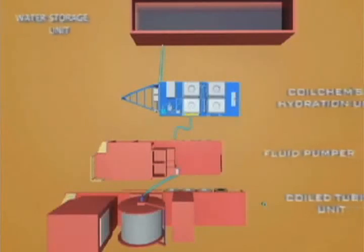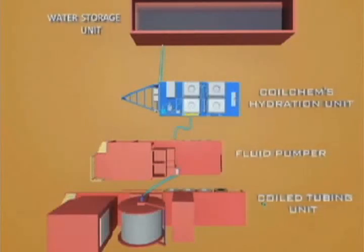A pressure transducer is connected downstream from the pumping unit to send data back to the Coilchem track processor and acquisition system.